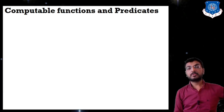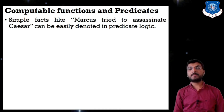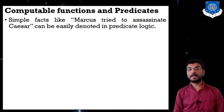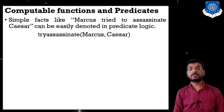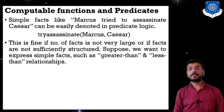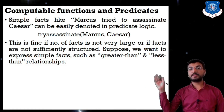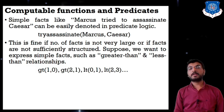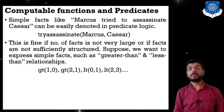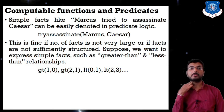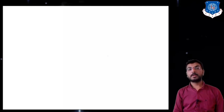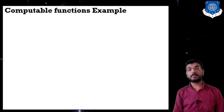Next topic: computable functions and predicates. Simple facts like 'Marcus tried to assassinate Caesar' can be denoted in predicate logic as try_assassinate(marcus, caesar). This is fine when the number of facts is not very large. For structured facts like greater-than and less-than relationships, we use: gt(1,0), gt(2,1), lt(0,1) — these are computable functions.